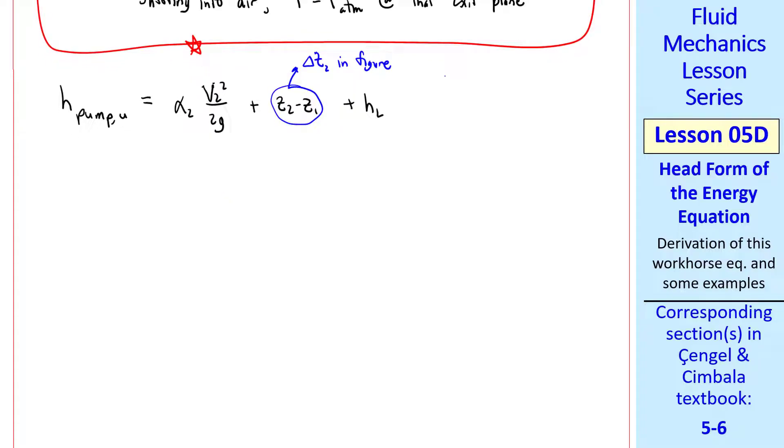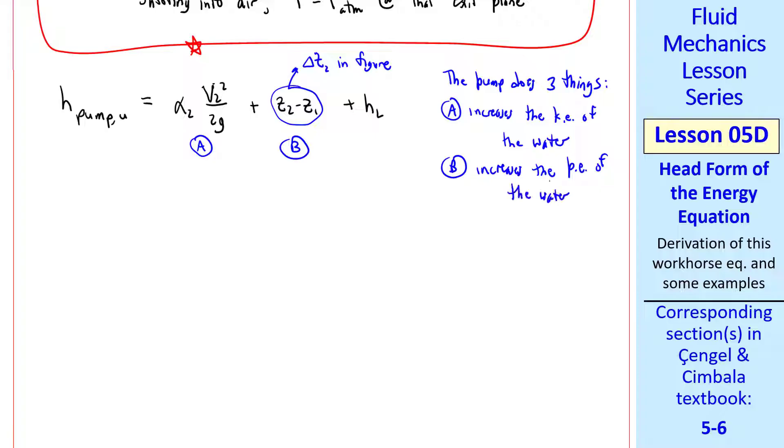We solve for H pump U, the useful head delivered by the pump to the fluid. We get H pump U equal alpha 2 V2 squared over 2g plus Z2 minus Z1, which we call delta Z2 in the figure, plus those pesty irreversible losses, which are always there. Looking at this equation as a side note, the pump does three things. The first term, I'll call A, it increases the kinetic energy of the water. Term B increases the potential energy of the water. And term C overcomes irreversible losses. Hopefully that helps you understand what the pump is doing.